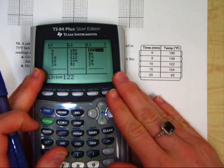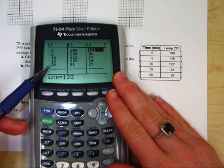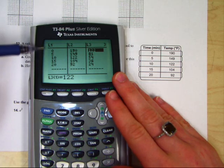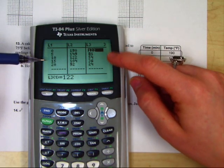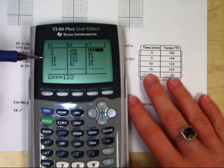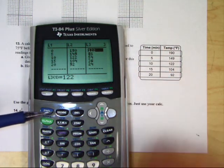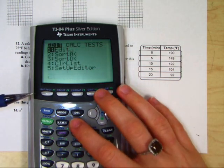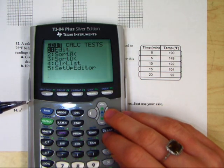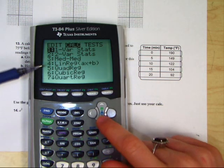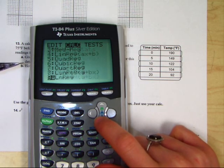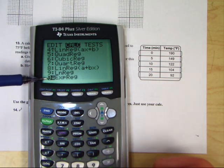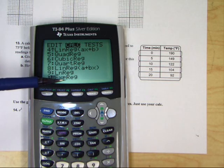Now that we have our data in, we actually have a new x and y. Our x's are still in L1, but our new y's are in L3. We're going to ignore L2 for a minute. So we're going to get our regression fit now. Hit stat, go over to calc. Because we want an exponential regression, we go all the way down to 0. When you find exponential regression, hit enter.